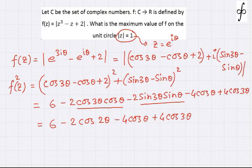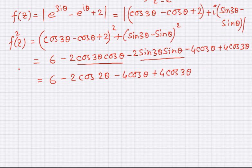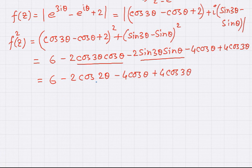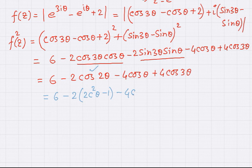This entire function f(z)² can be expressed as a function of cos θ, because cos 2θ can be written as 2cos²θ minus 1, and cos 3θ is nothing but 4cos³θ minus 3cos θ.